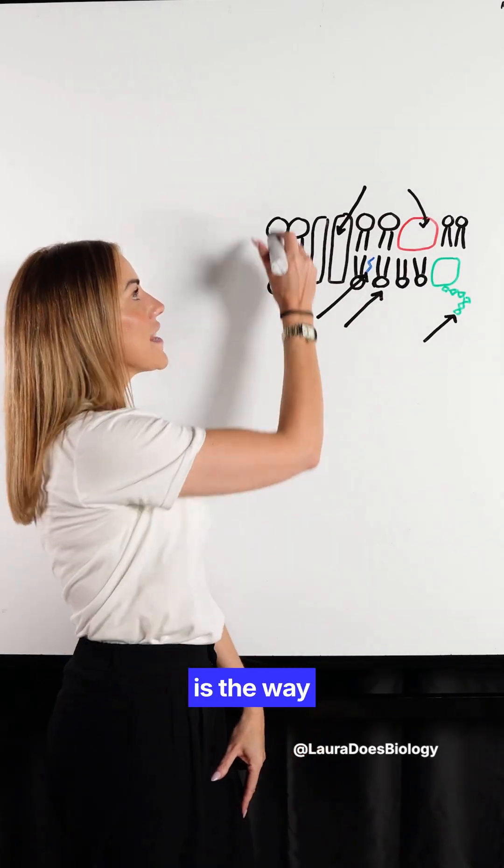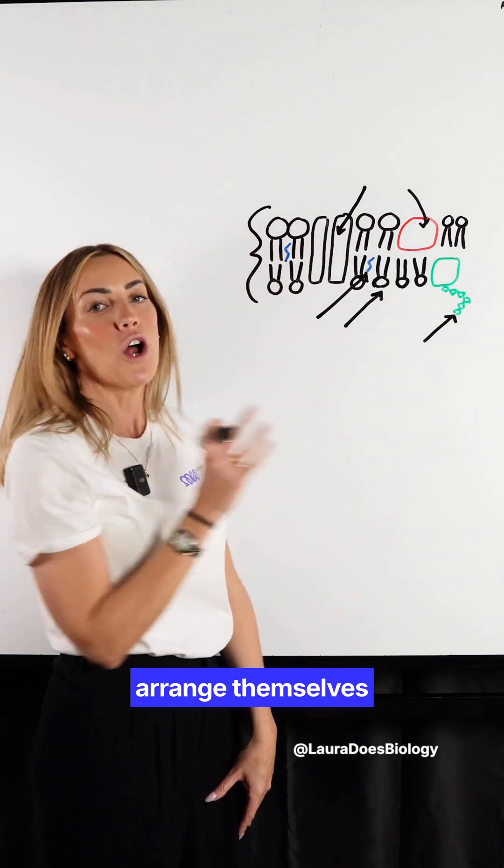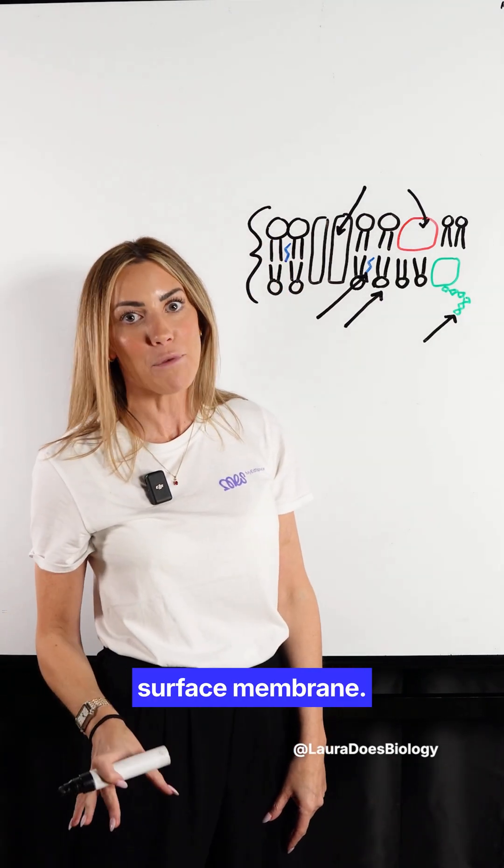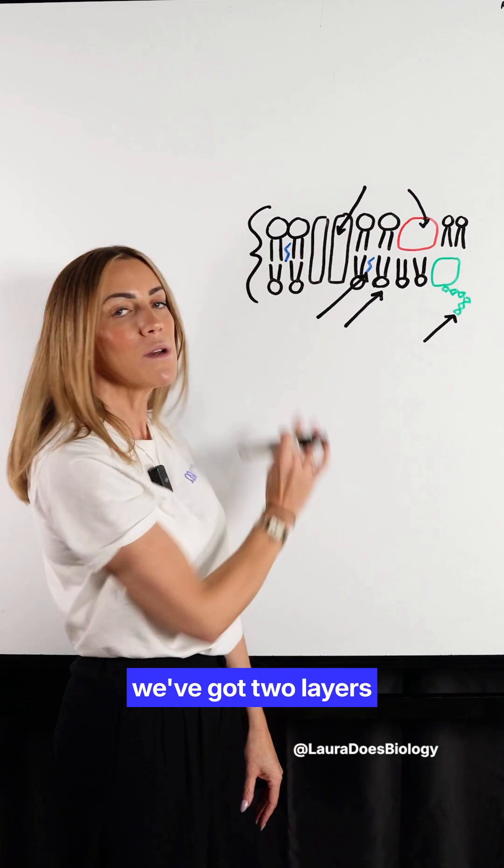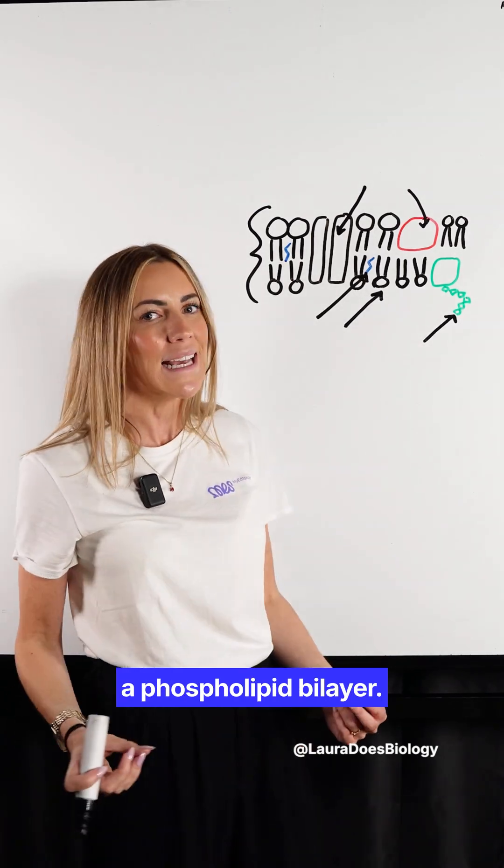Now what's interesting is the way that the phospholipids arrange themselves in the cell surface membrane. You'll notice that we've got two layers of phospholipids. This is called a phospholipid bilayer.